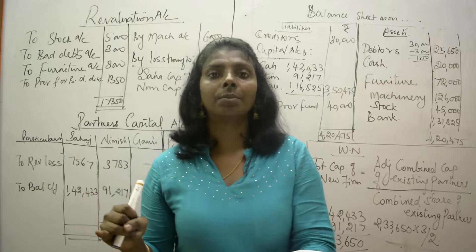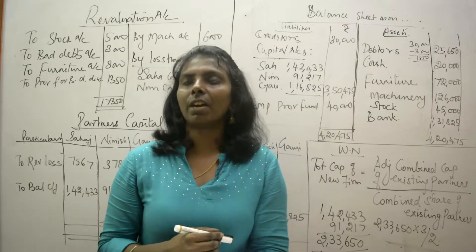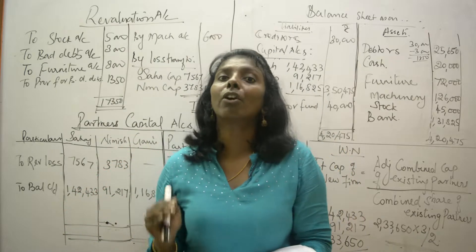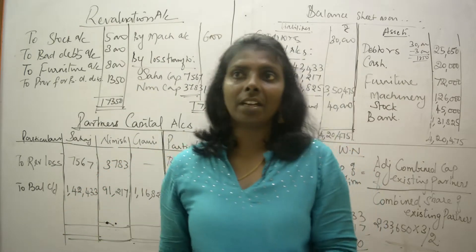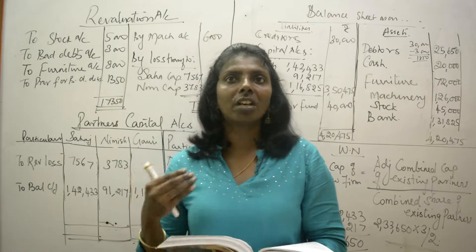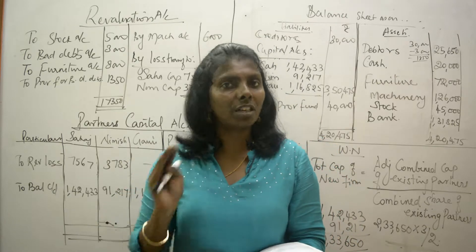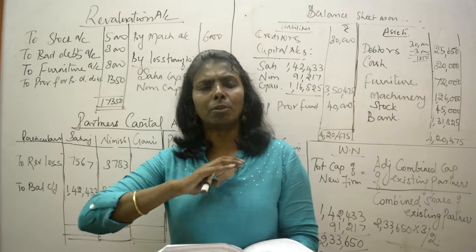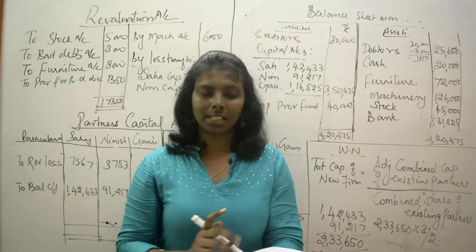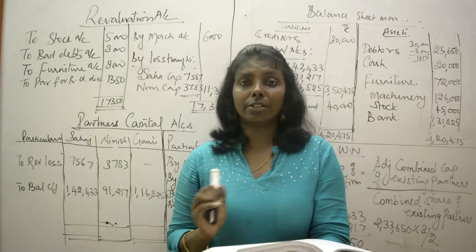Analyzing the balance sheet: we have General Reserve and Employee Provident Fund. This is very important — Employee Provident Fund is a liability of the firm, not of the partners. So you don't divide Employee Provident Fund among the partners. It is never divided in partnership admission, retirement, or death — in any case. It is just shown on the liability side.